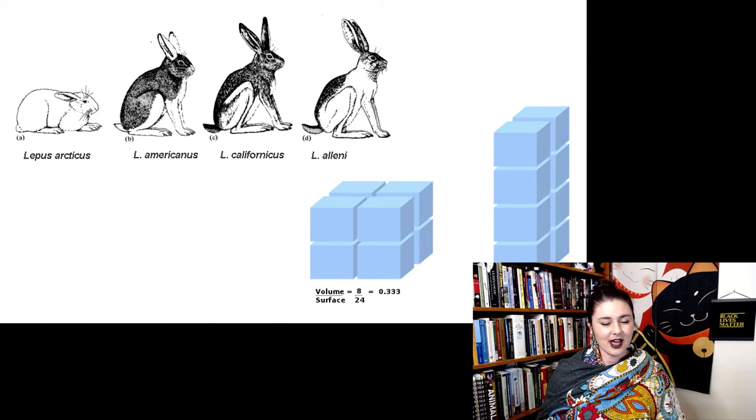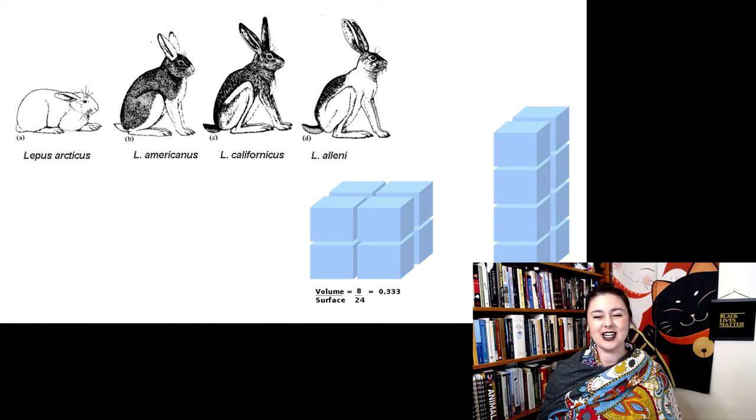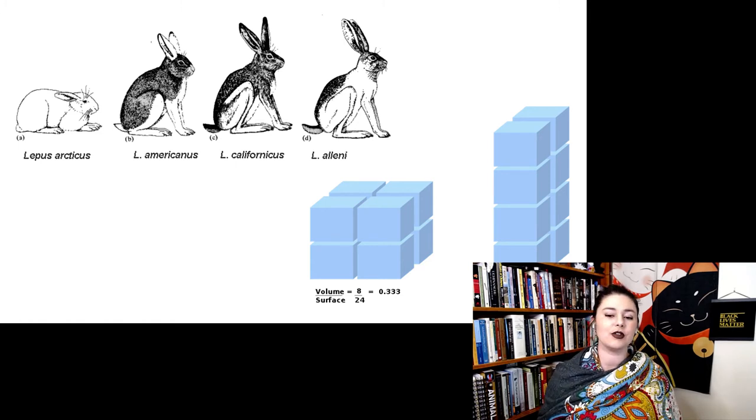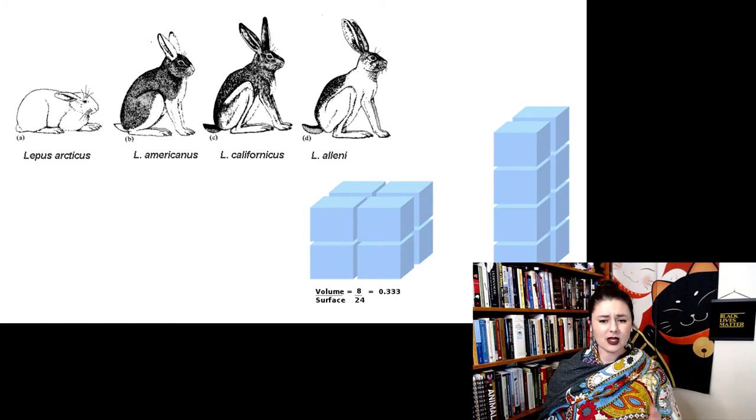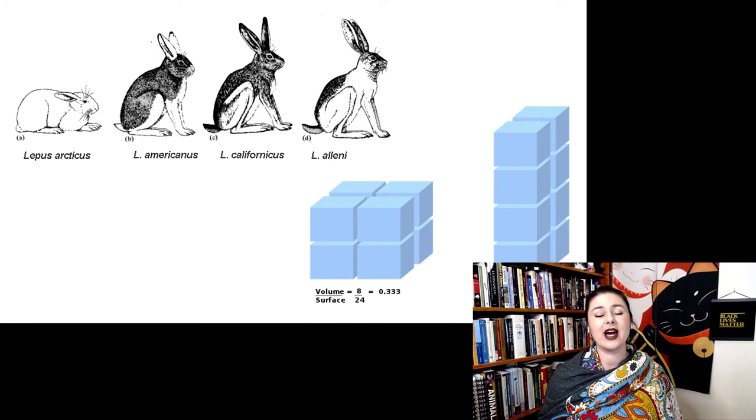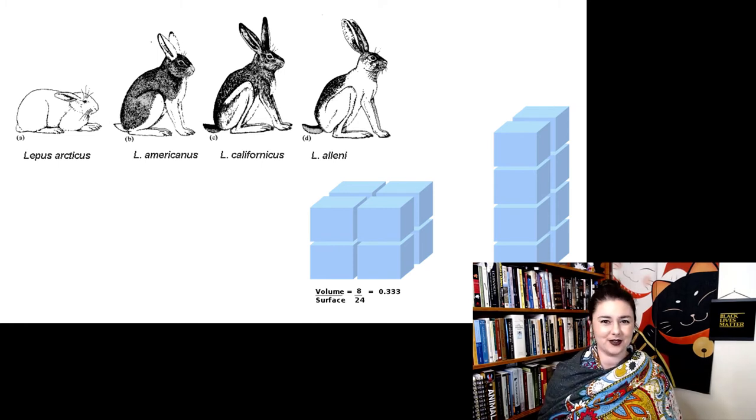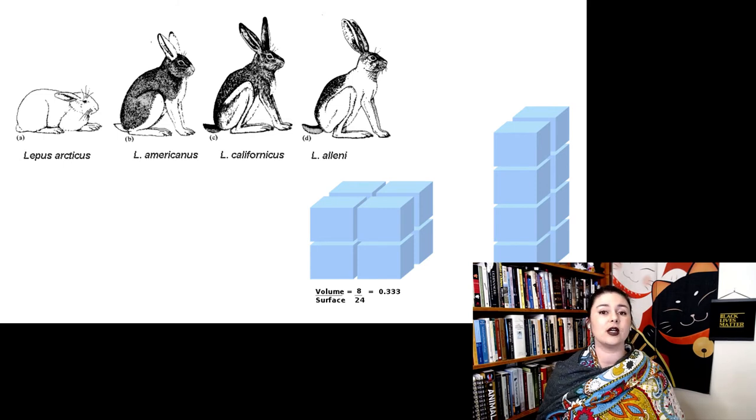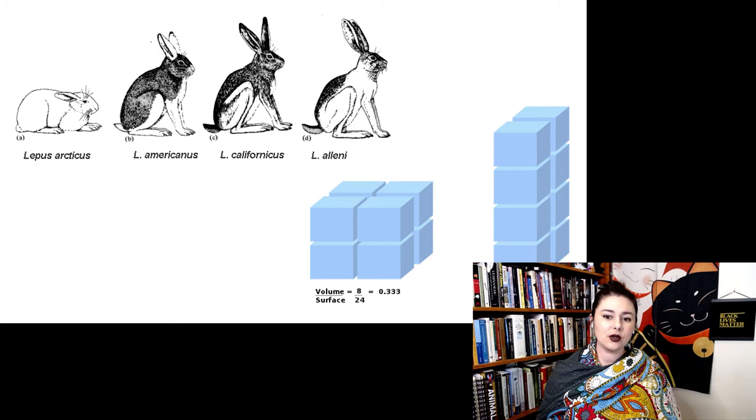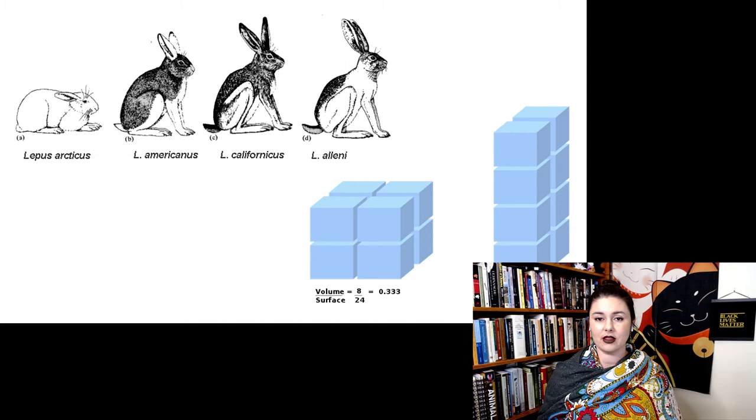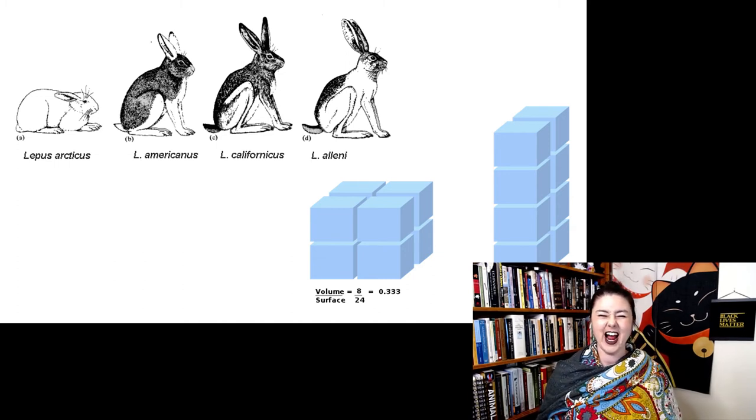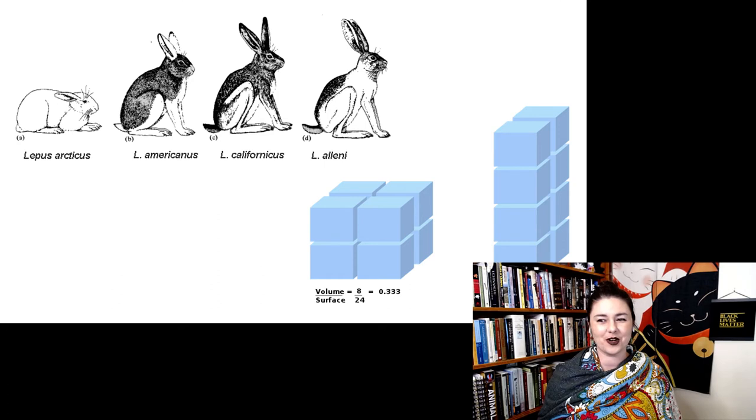We can again use our little cubes here to demonstrate this idea. But now the mass is the same in both of these examples. Here we first have a cube, so we have less surface area relative to mass. But if we simply arrange our cubes on top of each other, now we have more surface area relative to mass. So if you have the same mass, it's much easier to dissipate heat if you are a longer and thinner animal. This is just a different strategy that animals can use to dissipate heat in a warmer environment.